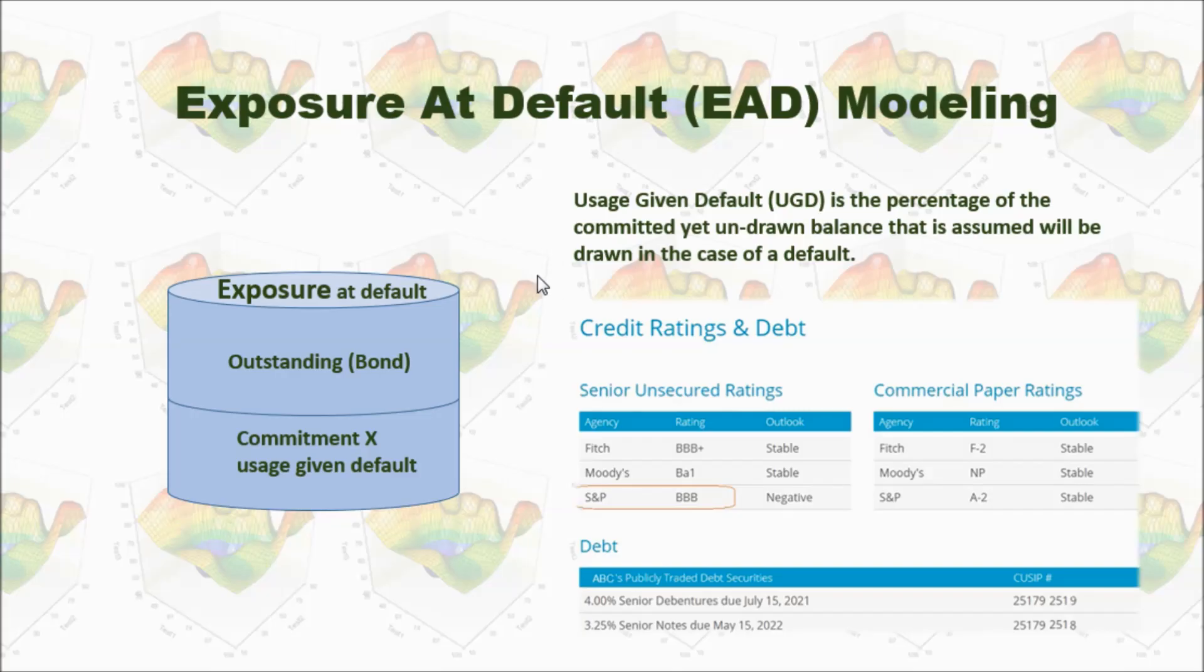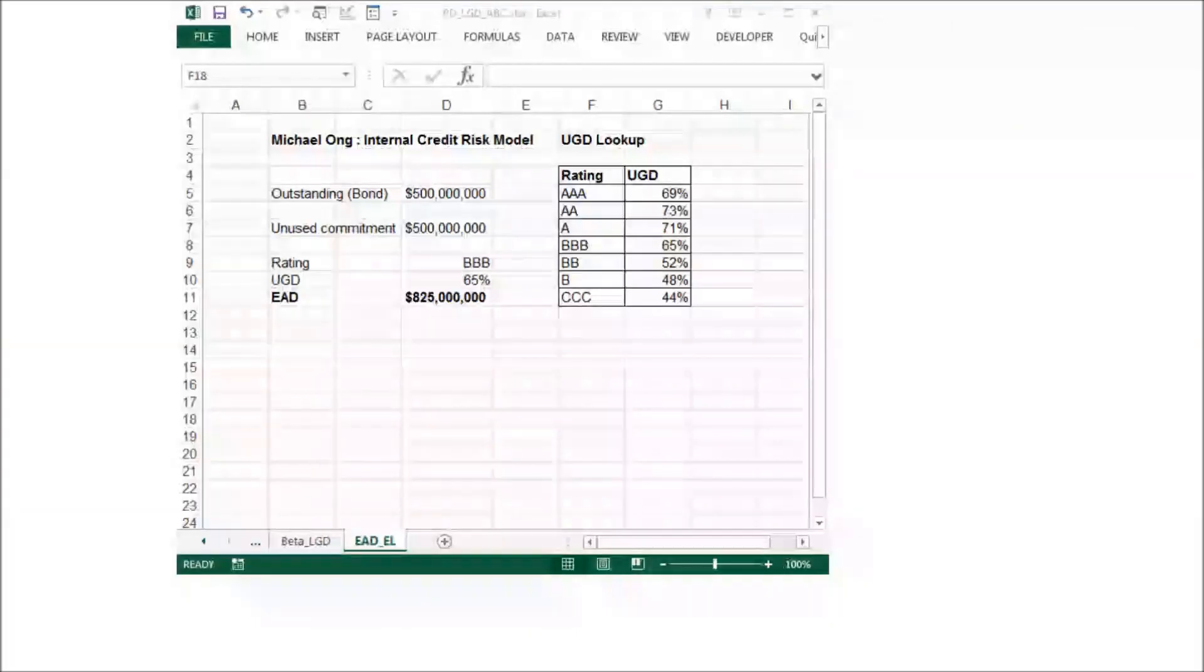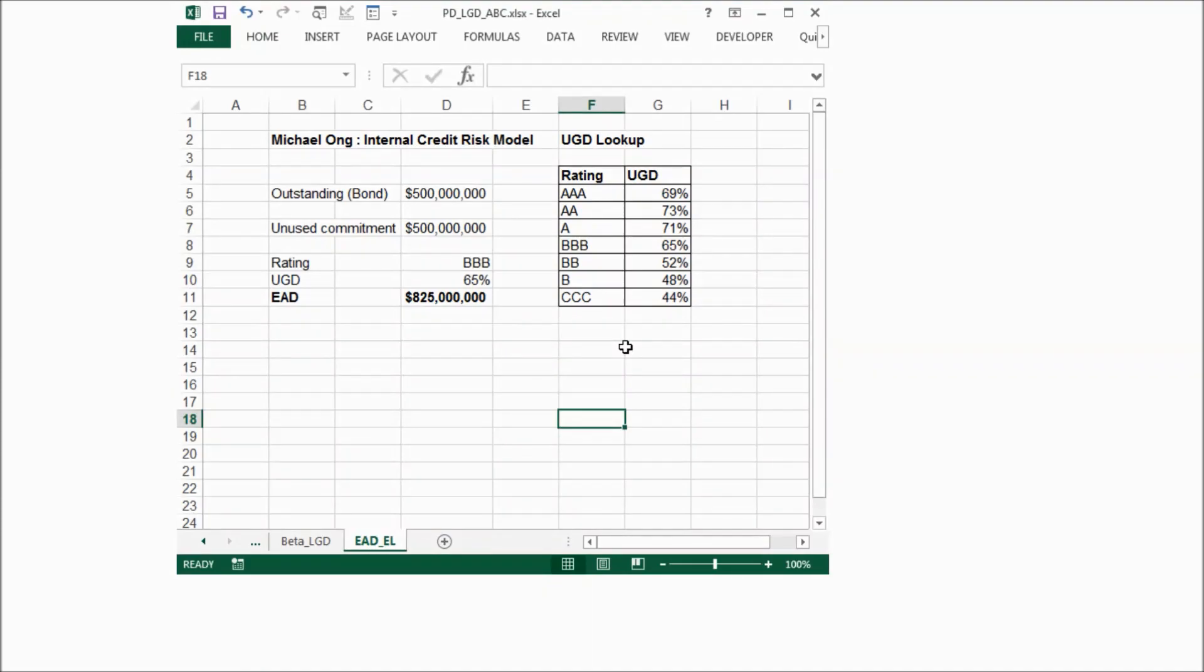First, I went to the company's website and checked the credit rating of this ABC company. It says this ABC company is rated as BBB according to S&P. Now, let's calculate exposure at default according to Michael Ong's internal credit risk model.